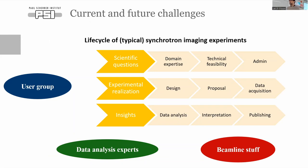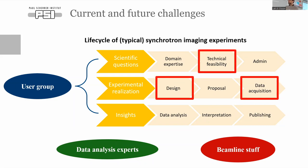I wanted to discuss the life cycle of a typical synchrotron experiment — who does what in this type of collaboration. You have the user group, who comes with scientific questions and an idea of how to realize the experiment, ideally bringing insights to the scientific community. On the other hand, the beamline staff helps evaluate technical feasibility, helps design the experiment, and is the main help during data acquisition.